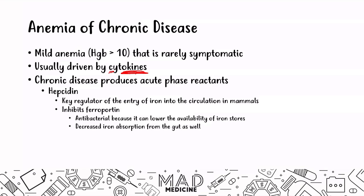Decreased iron absorption leads to a state of iron deficiency anemia. Early stages of iron deficiency anemia present as normocytic anemia. Additionally, hepcidin suppresses EPO — erythropoietin — which is secreted by the kidneys and stimulates red blood cell production. By inhibiting EPO, you get a decrease in RBC production, further causing mild anemia.